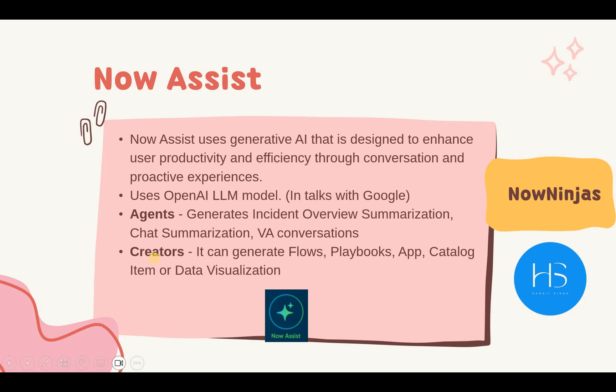Next, for creators — Now Assist has something for creators as well. You can automatically generate flows, playbooks, catalog items, or data visualizations like reports using Now Assist. You just give a prompt and those flows are automatically generated. You can write code for your business rules or client scripts and it will automatically generate that code. In the next videos in this playlist, I have shown you how to activate Now Assist on your ServiceNow instance and test chat summarizations, how to generate flows using just a prompt. I would highly recommend you go and check out those videos. There are many other videos coming on Now Assist, generative AI, and agentic AI, so please subscribe to my channel to watch all those videos.